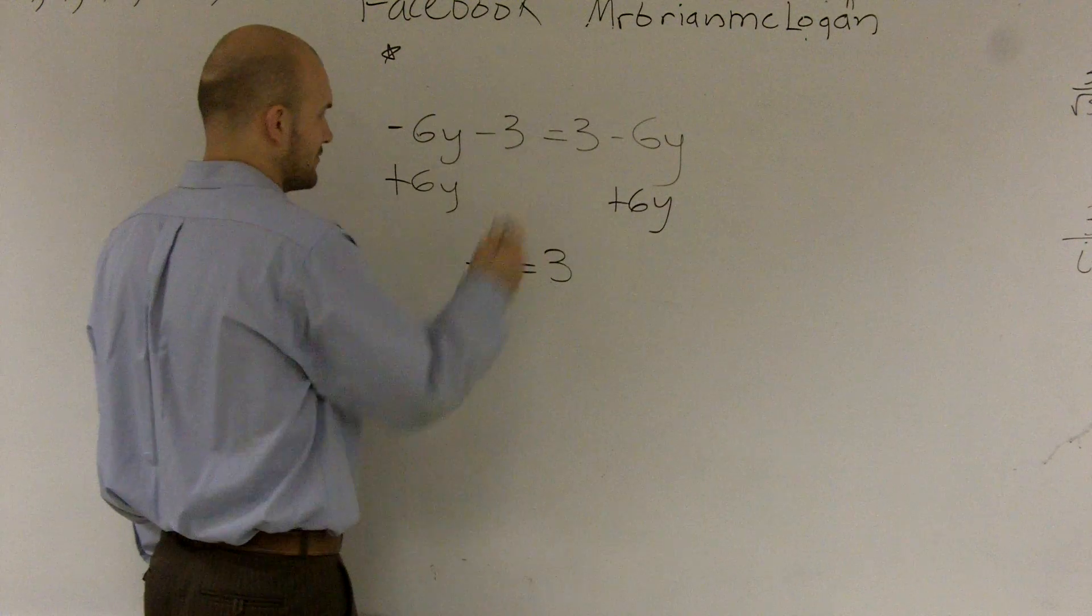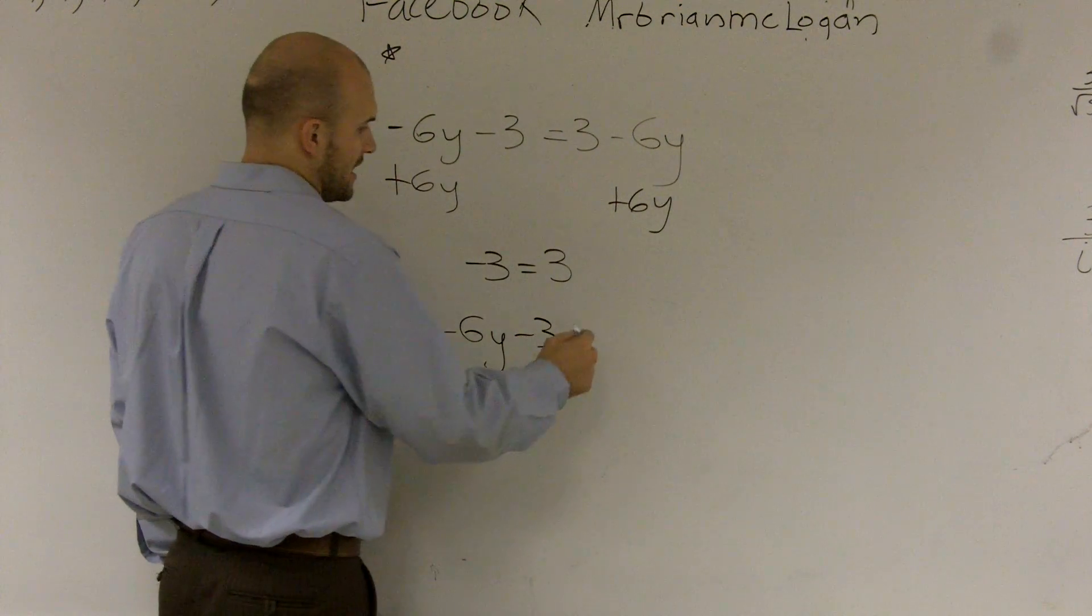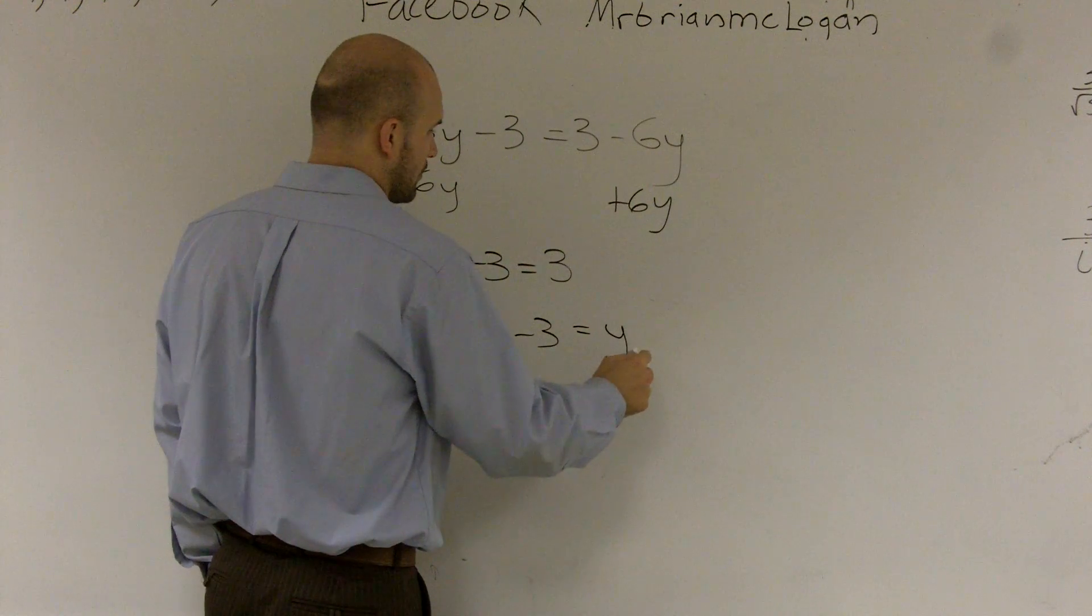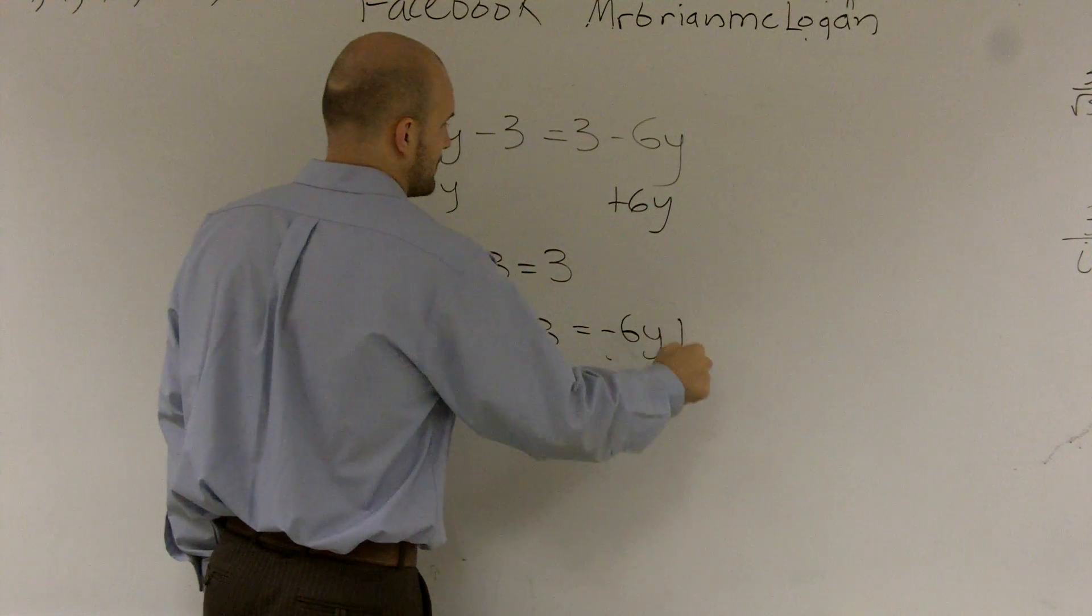And another thing you guys can just think about, if I can rewrite this, this might make a little more sense. -6y - 3 equals y or negative 6y plus 3.